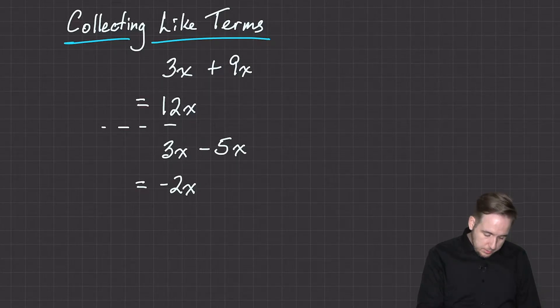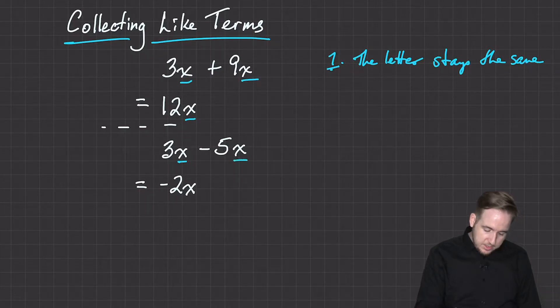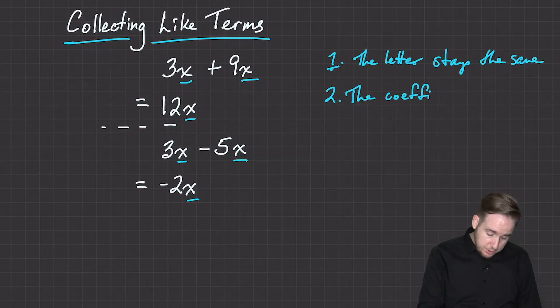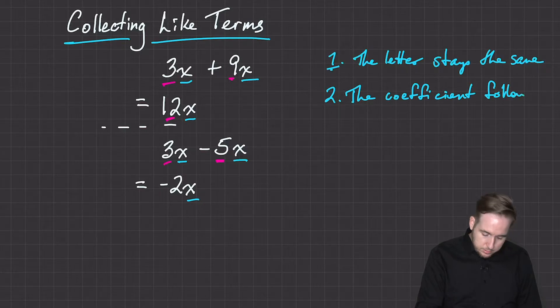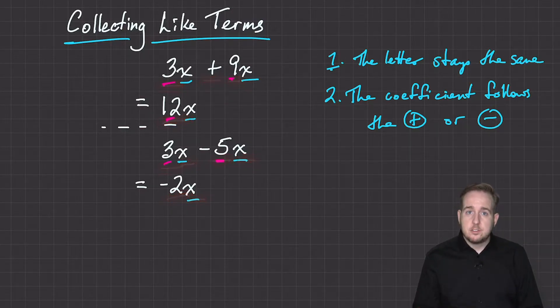And the way the rule works is, the letter stays the same. So x, x, x. The coefficient, which I can never spell, coefficient, which is the number in front of the variable, follows the addition or subtraction. So in these cases, watch, the x stayed the same, but what I did was I just did 3 plus 9 and got 12. The x stayed the same. I did 3 minus 5 and got minus 2. Make sense?